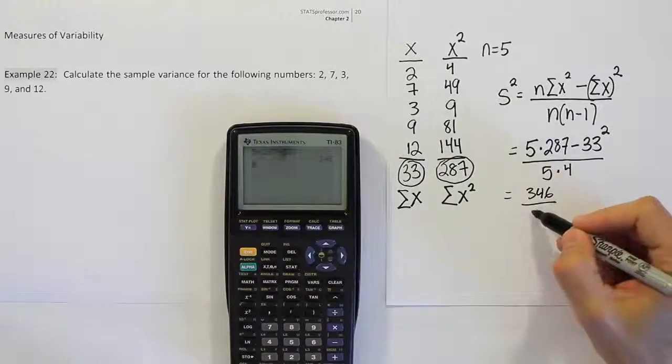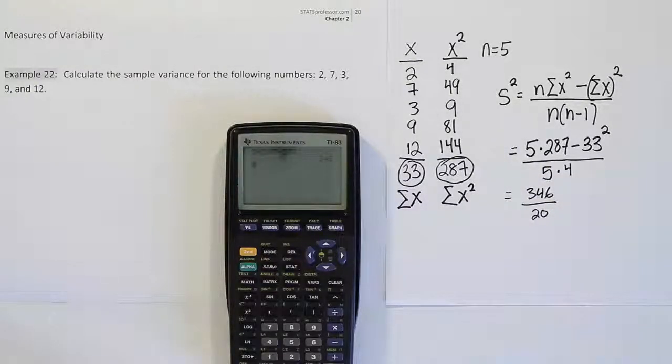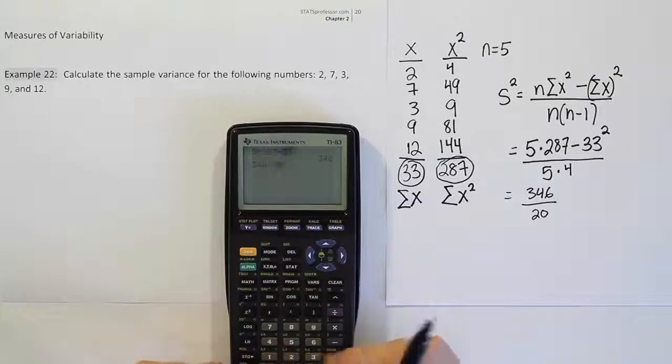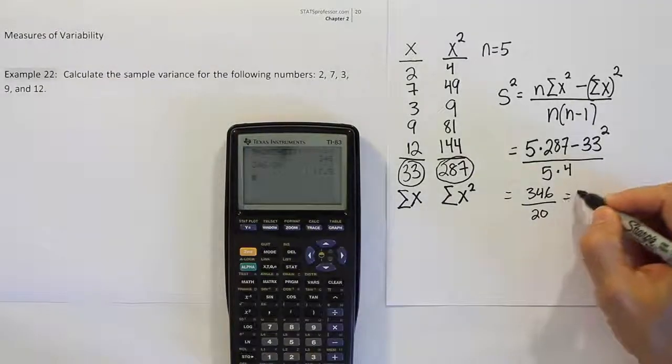5 times 4 is 20. And so lastly, we'll divide those two numbers. 346 divided by 20. And we get the answer 17.3.